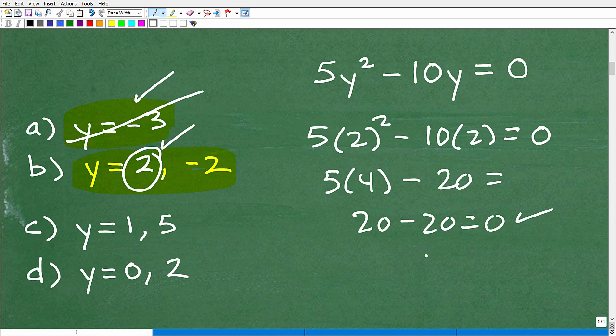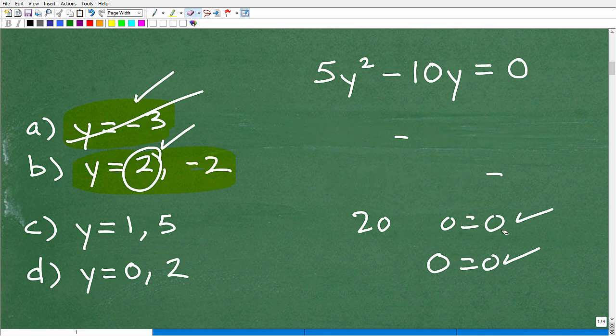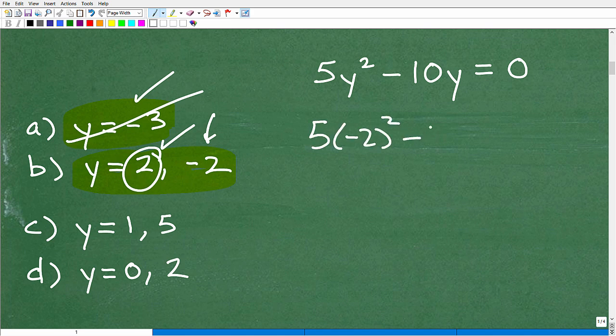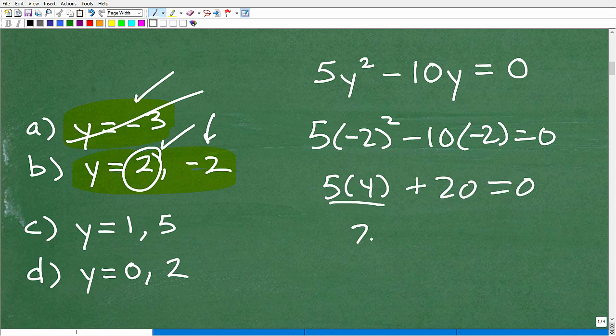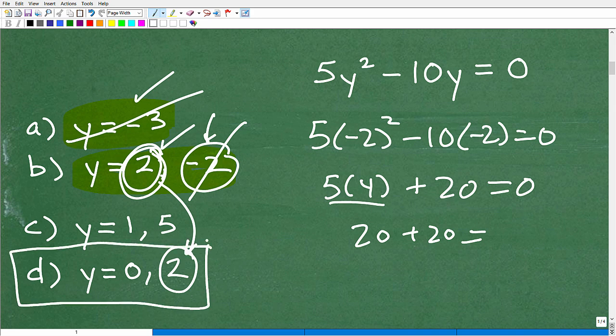But I need to check negative 2. Let's go check negative 2 real quick because that's this answer. Remember, this answer is y equals 2 and negative 2, so I'm going to have to check. So I'm going to get negative 2 squared which is 4, 5 times 4, minus a negative 10 times a negative 2, that's going to be positive 20. I've got a problem here. This is 20 plus 20, so unfortunately this doesn't work. But 2 was correct. So at this point, if you're paying attention, what is our only option? Well if 2 is correct, this answer has 2. This must be the right answer. And in fact it is, it is the correct answer.